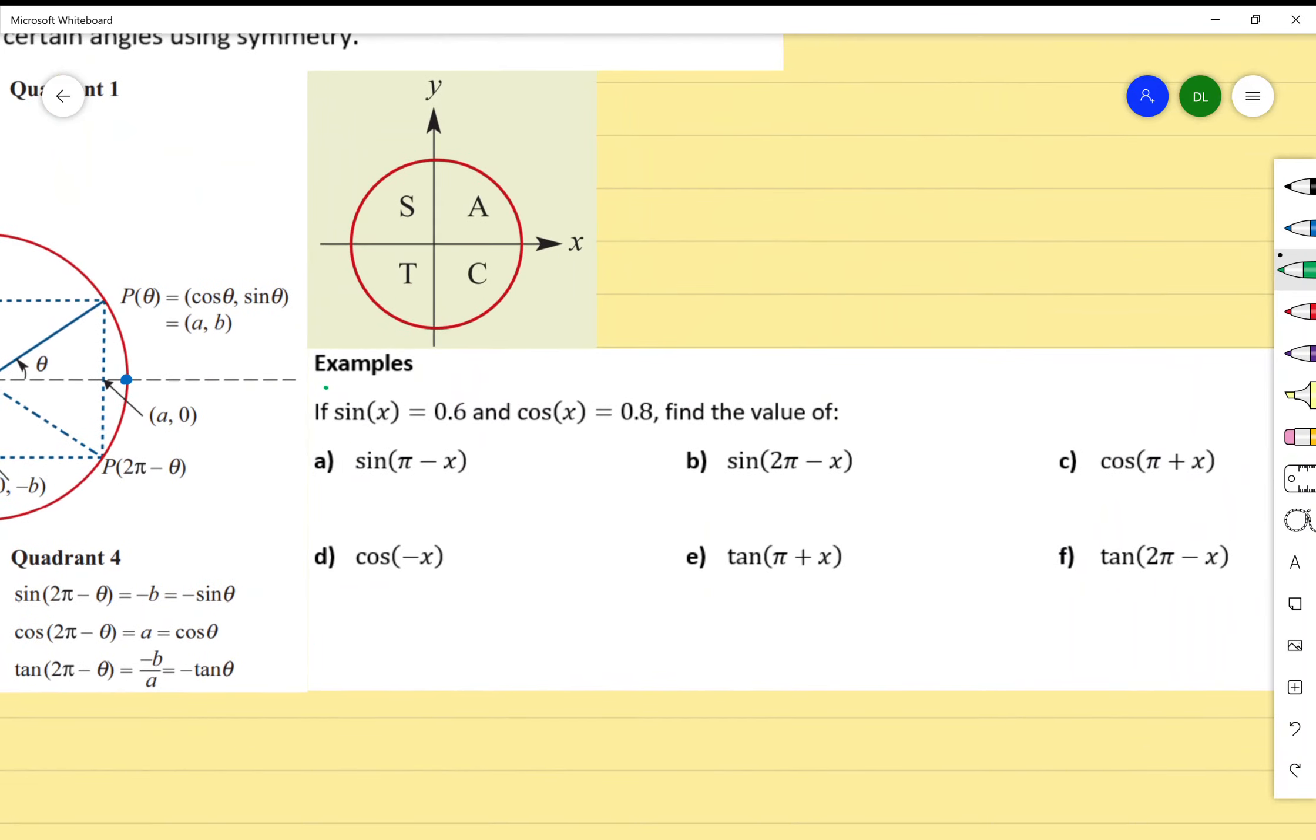Let's try to put this into practice. I'm not going to go through all these, but the example is pretty much the same. In this example, it says if sin x equals 0.6 and cos x equals 0.8, find the value of sin(pi minus x). We're using x instead of theta, but it's saying that sin x equals 0.6, which means that whatever our angle is, the Y value is 0.6.